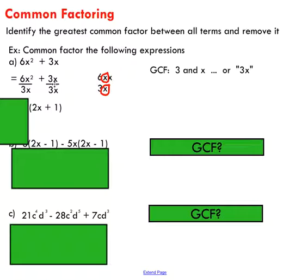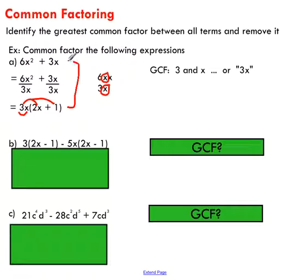You can't just divide things randomly in an expression — you have to account for the division by multiplying by the common factor. So we take our greatest common factor outside the brackets and multiply by whatever's left. If you distribute the common factor 3x back into the brackets, you should get your original expression. That's one of the best parts about common factoring: you can always check and verify your answer.